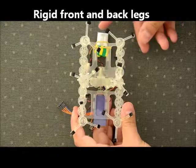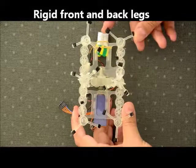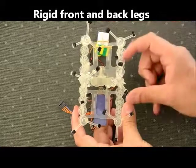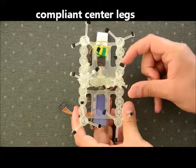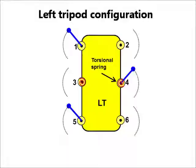How does it work? The Star has rigid legs at the front and back and compliant legs at the center. The left tripod configuration has two rigid legs on the left and one compliant leg on the right.